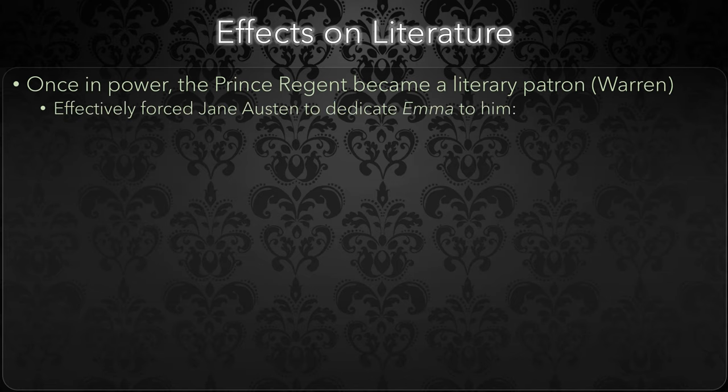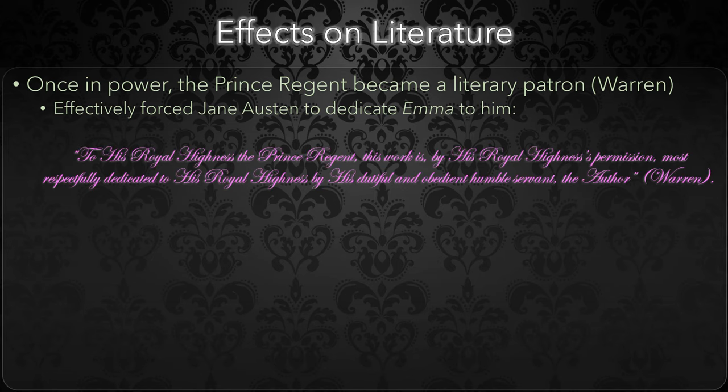He somewhat infamously forced Jane Austen to dedicate her novel Emma to him. The Prince gave her the honor of dedicating the book to him, a charge which Austen could not refuse. Nevertheless, her dedication is subtly snarky: "To his royal highness, the Prince Regent, this work is, by his royal highness's permission, most respectfully dedicated to his royal highness, by his dutiful and obedient humble servant, the author." Therefore, Austen was keenly aware of King George's absence at the throne during the Regency era.